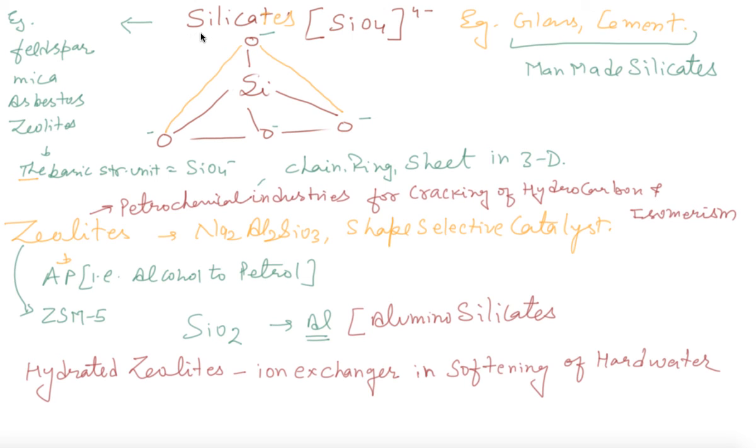Now the next compound of silicon is silicates. Silicate is SiO4, silicon containing oxygen. And silicates are a large number of silicate minerals exist in nature, like feldspar, mica, asbestos, zeolites. And the basic structure unit of all the silicate is SiO4 tetrahedral.